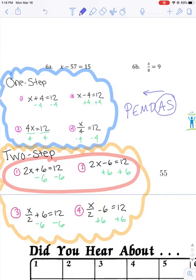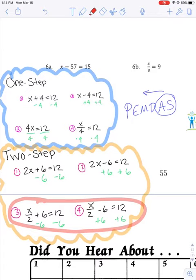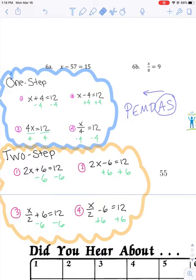So in the two-step equation number one, we would subtract 6 from both sides. And from the two-step equation number two, we would add 6 to both sides because that would be the opposite of each of those addition and subtraction steps. Now let's look at the 3 and 4. Similar setup. We have x over two plus six and we have x over two minus six. We are again going to start with the addition or subtraction. We're undoing it. We're working backwards. So we start with either subtracting six from both sides if the six is positive, or if the six is negative, we will add six to both sides because it's the opposite.